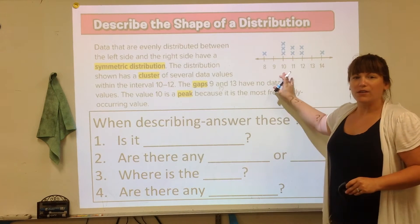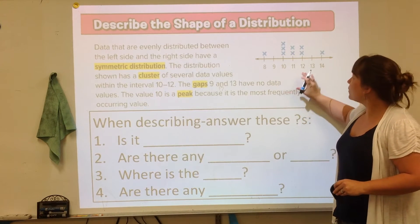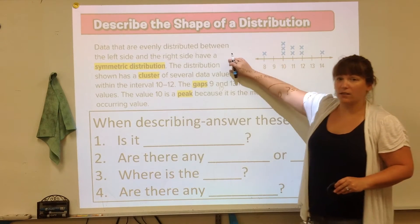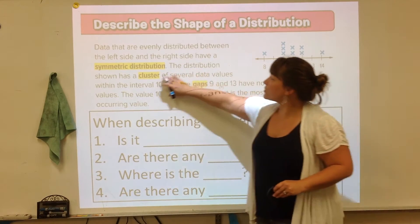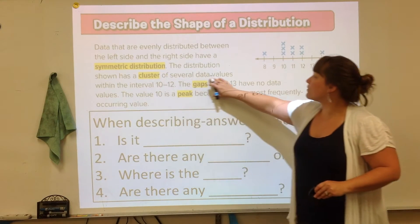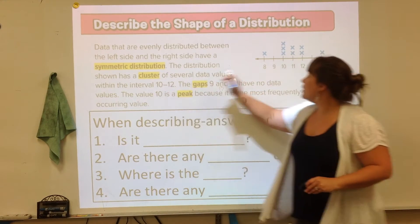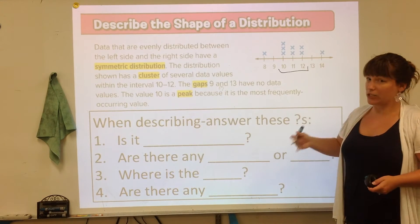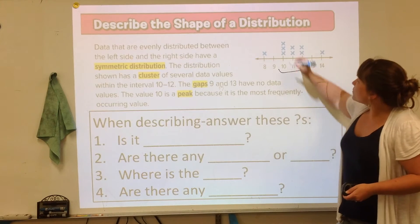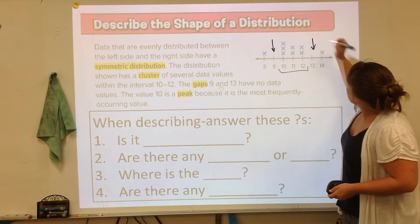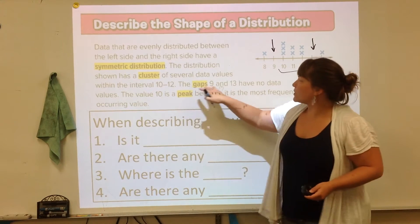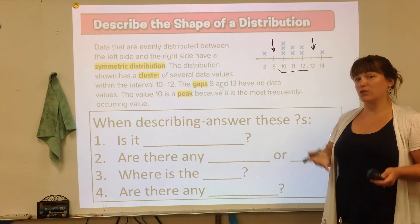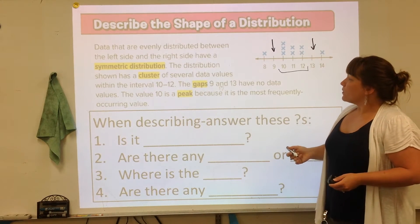How would we describe something like this? Well we could say that there's a cluster. That's the second sentence here. The distribution shows a cluster of several data values within the 10 to 12 interval. Notice that they use the word interval even though it's not a histogram. The other thing to note are these gaps. The gaps 9 and 13 have no data values. That's another thing you can do to describe the distribution.